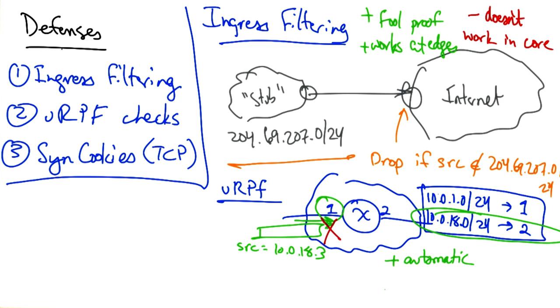So the benefits of URPF is that it's automatic. But the drawbacks are that it requires symmetric routing. And we know from earlier lessons that routing in the internet is often asymmetric. Therefore, in any situation where asymmetric routing is a possibility, it is not possible or reasonable to use URPF.